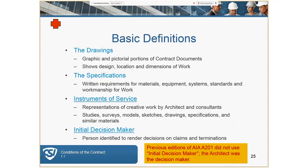Some more basic definitions: drawings and specs are somewhat self-explanatory. The initial decision maker is a relatively new entity within the A-201, set up for impartial claims resolution. It's commonly defined as the architect, but it might be an impartial third party — someone all parties agree to with significant related project experience.